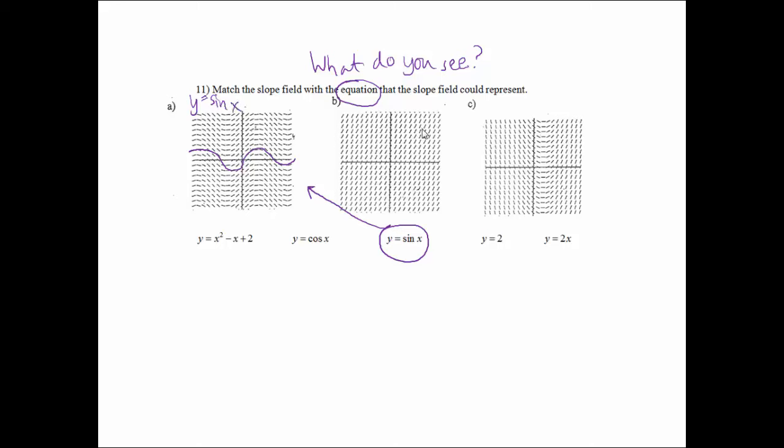For b, I'm just going to look at what do I see. I see a bunch of lines going this way if I'm putting them all together. And which one would represent the equation of that line? That would be y equals 2x.